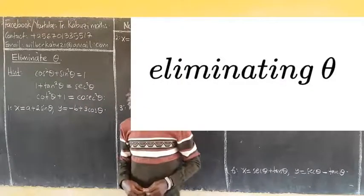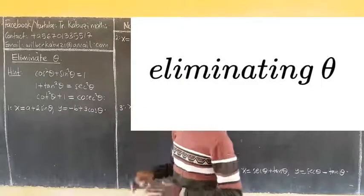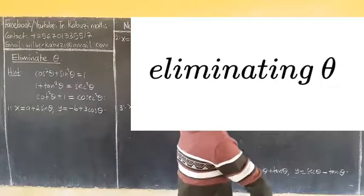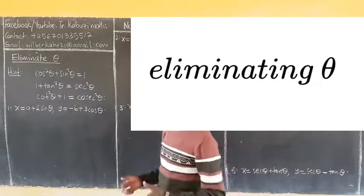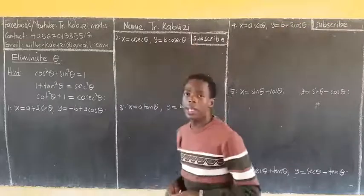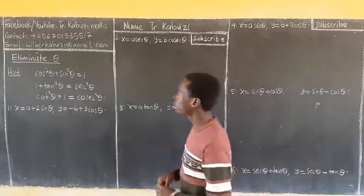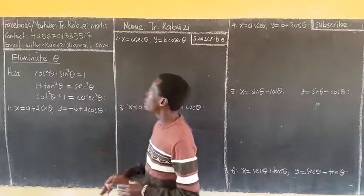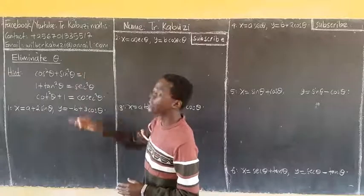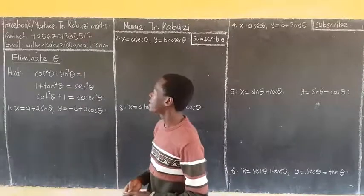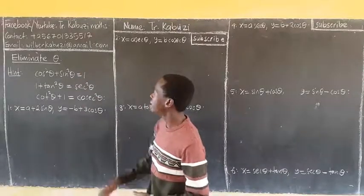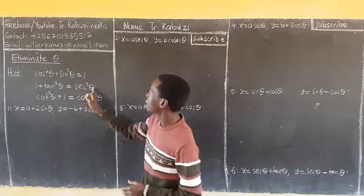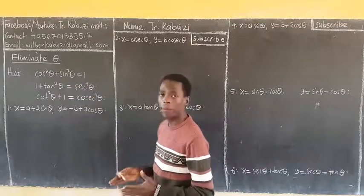Welcome back to today's lesson. Today we are going to see how we eliminate theta in given equations. To eliminate theta, we always use the first three Pythagorean identities: cos squared plus sin squared equals one, then this one and this one.